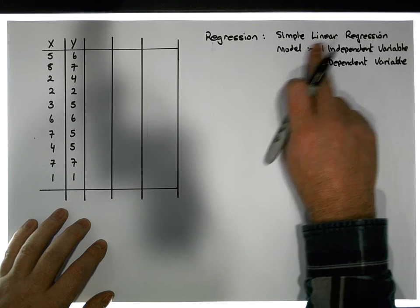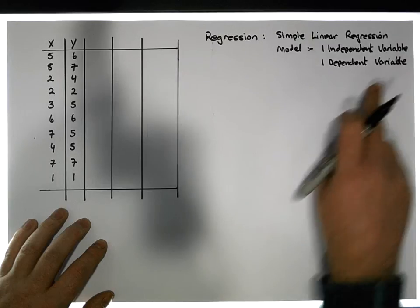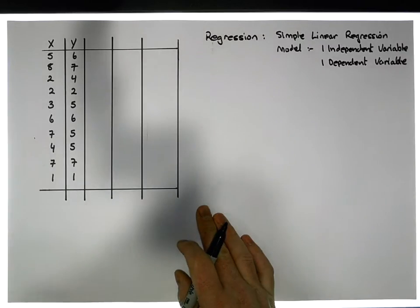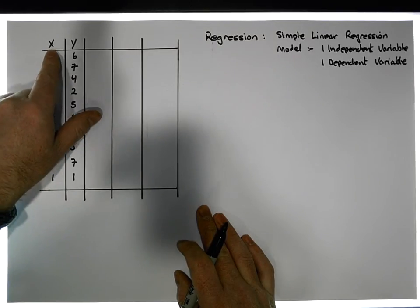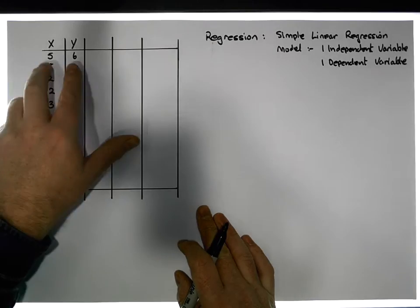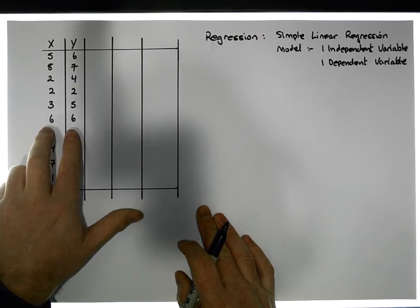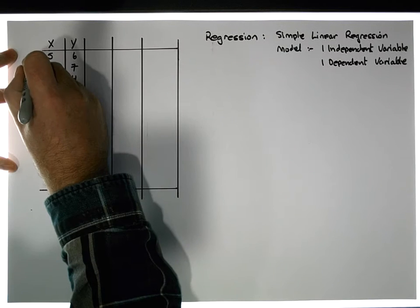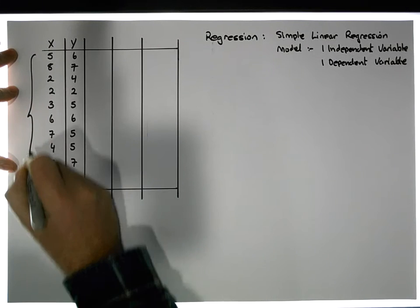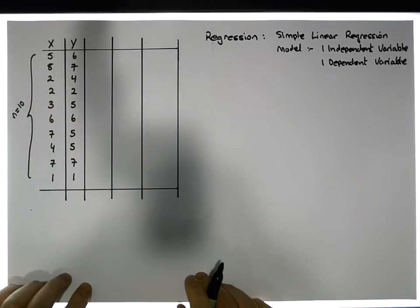By simple linear regression model, I mean a model that has one independent variable and one dependent variable. The data set we're going to rely upon is the same data set from our previous video dealing with correlation analysis. It has a single independent variable x, a single dependent variable y, and a set of paired observations — in particular, 10 paired observations, so the sample size is n equals 10.